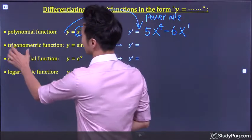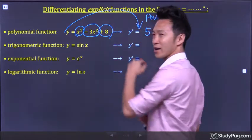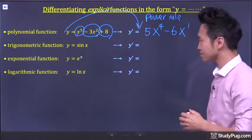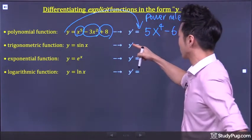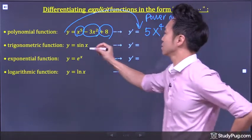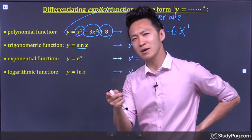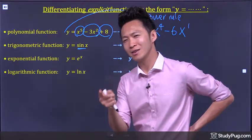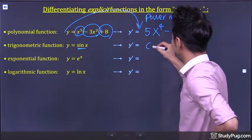Differentiating a trigonometry function: y is equal to sine x. The derivative y prime is? The derivative of sine is cosine. You got it.